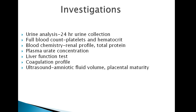For blood chemistry and renal profile, we look at urea and creatinine levels. We also assess plasma uric acid concentration, because a high level indicates placental insufficiency. For liver function test, we look at AST and ALT levels. When the patient develops preeclampsia, liver function will be deranged, and coagulation profile will also be deranged. From ultrasound, we look at amniotic fluid volume and placenta maturity.